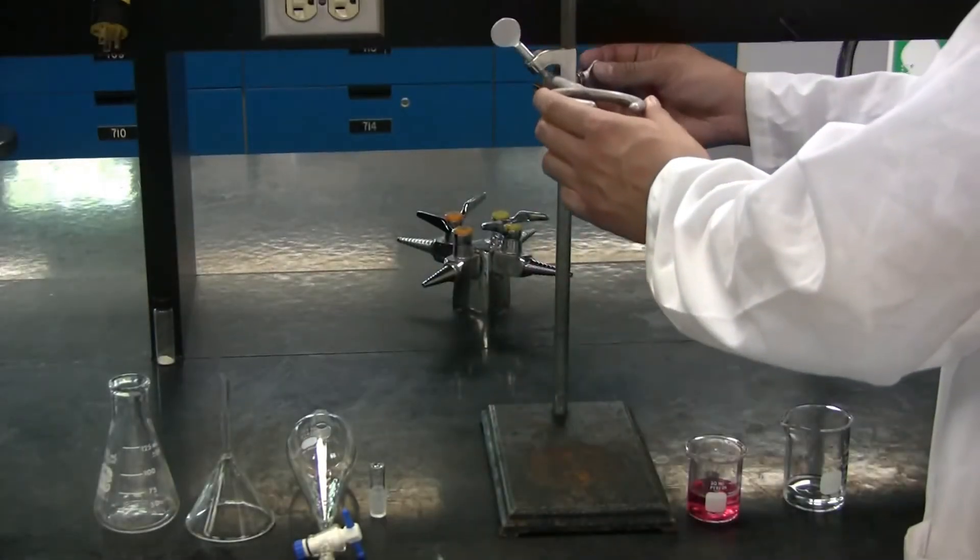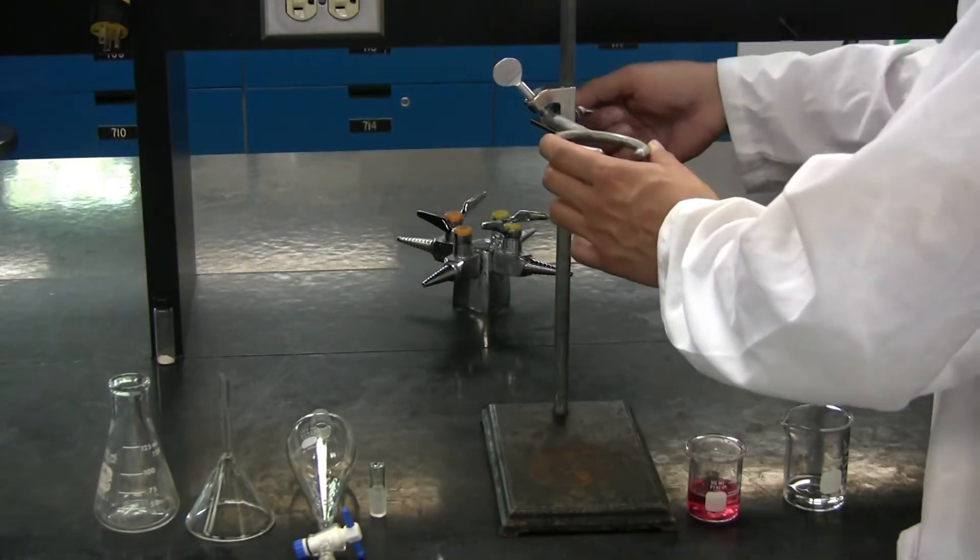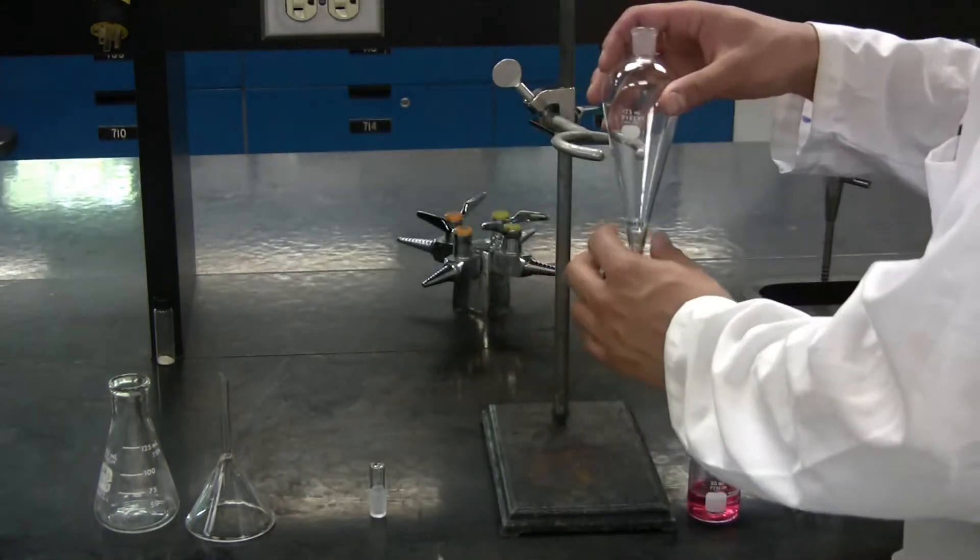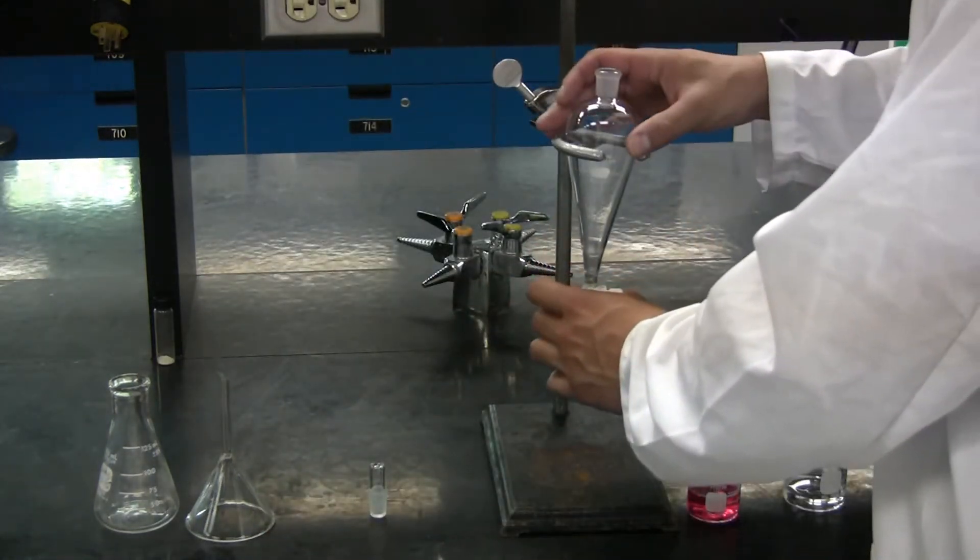Start by placing the ring clamp onto the retort stand. Next, take your separatory funnel and place it in.